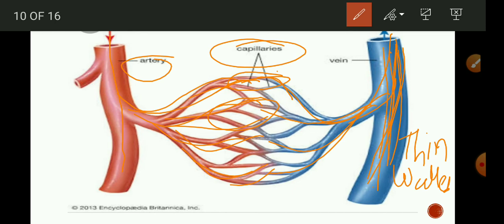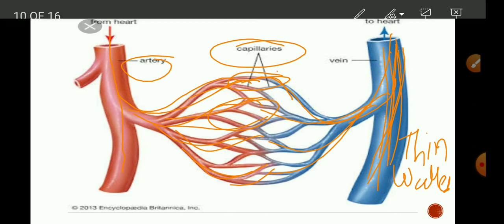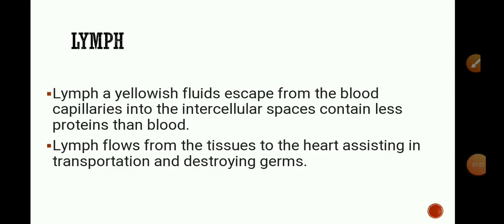Veins carry deoxygenated blood except the pulmonary vein, which carries oxygenated blood from the lungs to the left atrium.